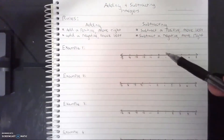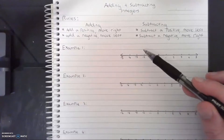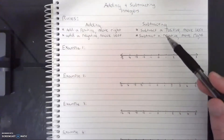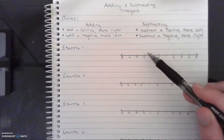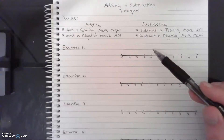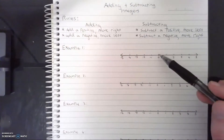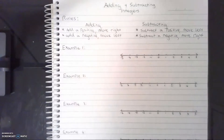If we are adding a positive, we move to the right of our original number. If we're going to add a negative, we will move to the left of our original number.